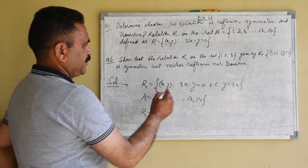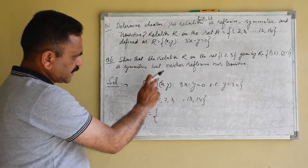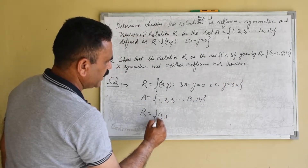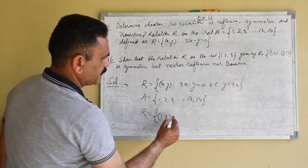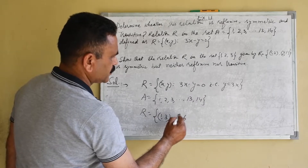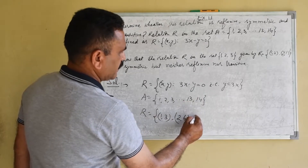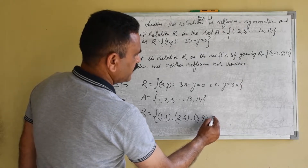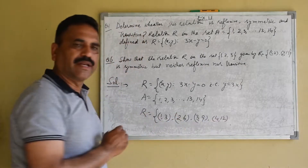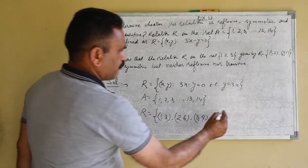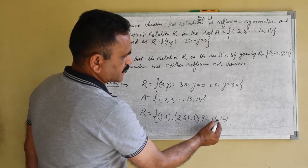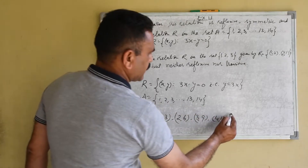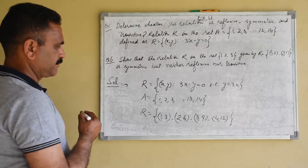Because relation R is a set of ordered pairs (x, y) where y = 3x. If x = 1, y = 3, giving (1, 3). If x = 2, y = 6, giving (2, 6). If x = 3, y = 9, giving (3, 9). If x = 4, y = 12, giving (4, 12). We cannot take x = 5 because y would be 15, which is not a member of set A. So this is the roster form of relation R.